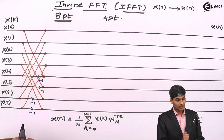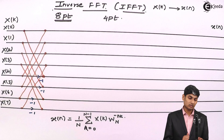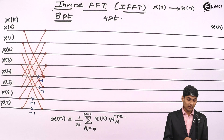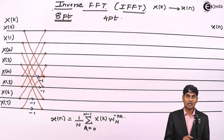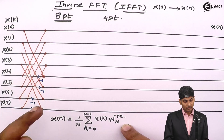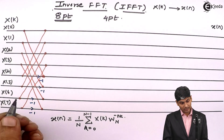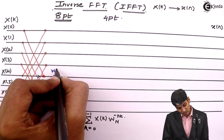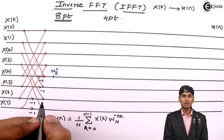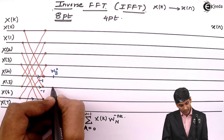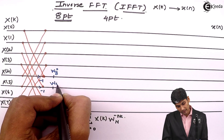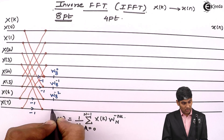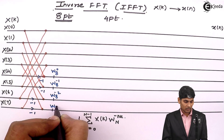The next step is to put the twiddle factors. The twiddle factor in IFFT will have a negative index according to the formula. Whenever I put the twiddle factor here, it will be with the negative index. So the twiddle factors will be W8 raised to 0, then W8 raised to minus 1, then W8 raised to minus 2, and finally W8 raised to minus 3.